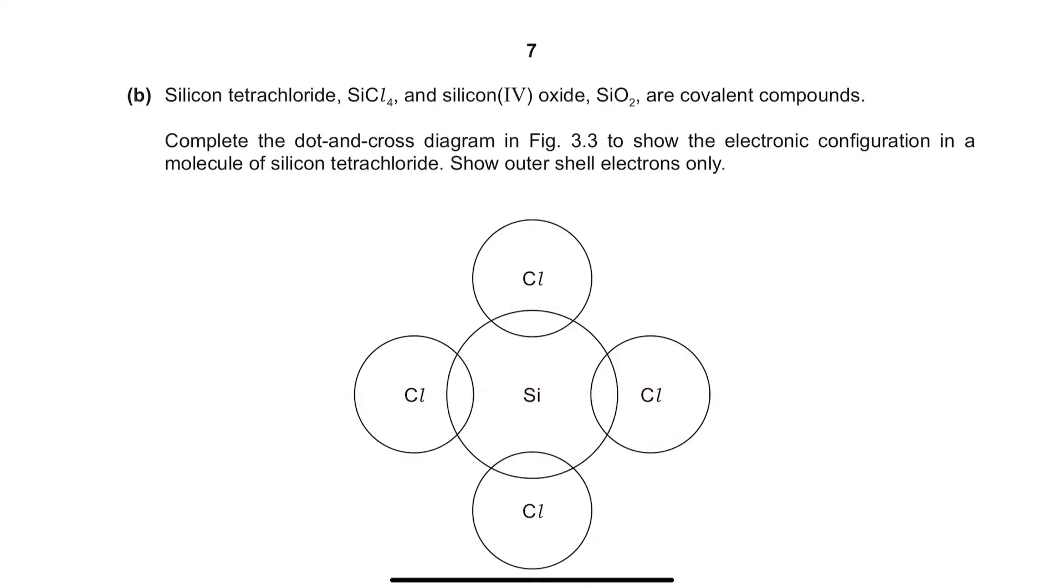Question B. Silicon tetrachloride and silicon oxide are covalent compounds. Complete the dot and cross diagram in figure 3.3 to show the electronic configuration in a molecule of silicon tetrachloride. Show outer shell's electrons only. Before drawing, let's identify the elements that present. Silicon and chlorine. Next, let's write down their electron configuration. From here, we can see that silicon needs another 4 electrons to be stable, whereas chlorine needs 1 more electron to be stable.